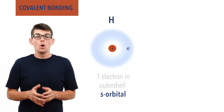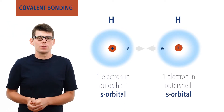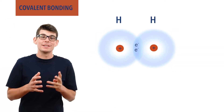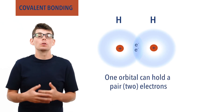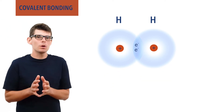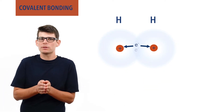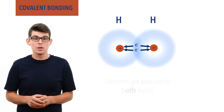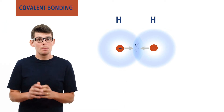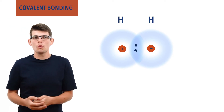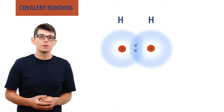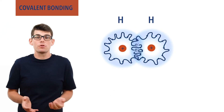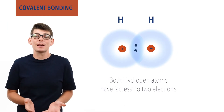Imagine another hydrogen atom, also with one electron in its one s orbital, coming closer to the first hydrogen atom. Because each orbital is half filled and contains only one electron, they can start to overlap, as both orbitals can take another electron — remember, one orbital can hold a pair of electrons. There will come a point where an electron in one hydrogen atom will be just as attracted to the positive nucleus of the other hydrogen atom as it is to its own nucleus. At the same time, the positively charged nuclei of both hydrogen atoms will be attracted to the increased electron density between them, pulling them inwards and closer together.